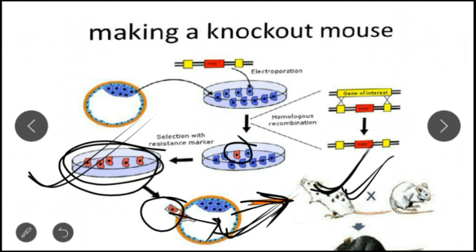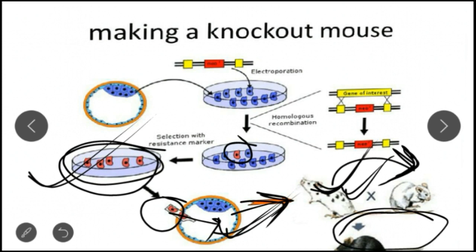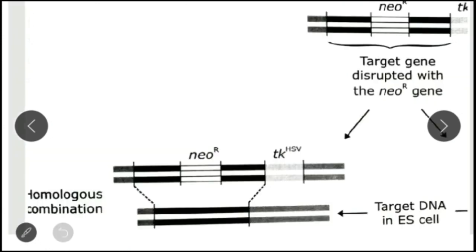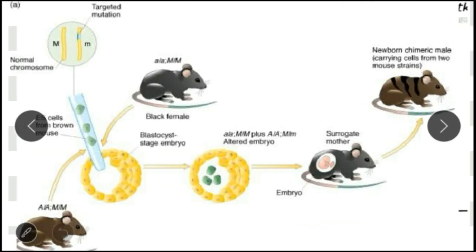If you want to create a homozygous progeny, you have to fertilize the heterozygous knockout mouse with another heterozygous male. After fertilization, you will get a homozygous knockout mouse.